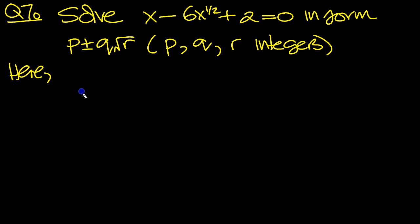So x to the half then is equal to minus b is minus the minus 6, so that's plus 6, plus or minus the square root of b squared, which is minus 6 squared, which is 36.